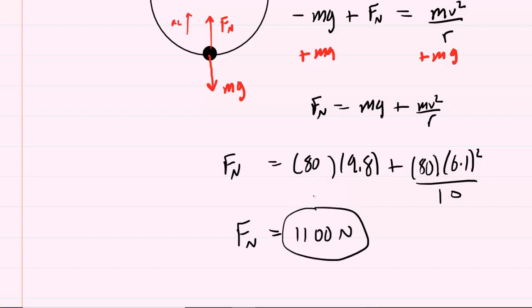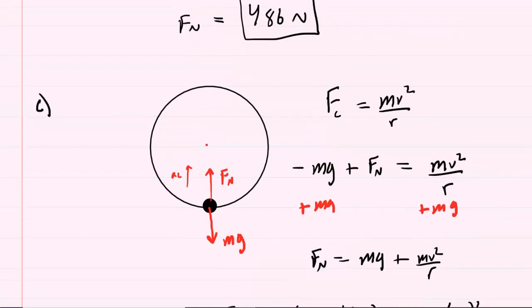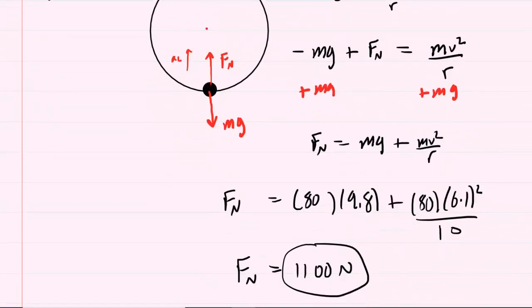Notice the normal force is larger at the bottom of the circular path than it is compared at the top of the circular path.